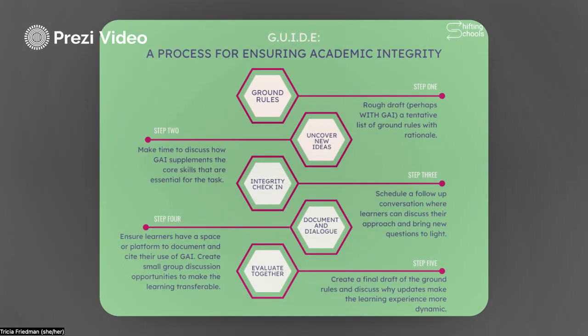The first step is to think about establishing new ground rules for that assessment or learning engagement. You might actually use a tool like ChatGPT to do so — go to ChatGPT, describe what the learning engagement or assessment is, and ask it to generate a few ground rules. Then bring those ground rules to your class, uncover new ideas, and discuss how the generative AI tool supplements the core skills essential for that task — not to do the thinking for us, but to be our thought partner in the process.